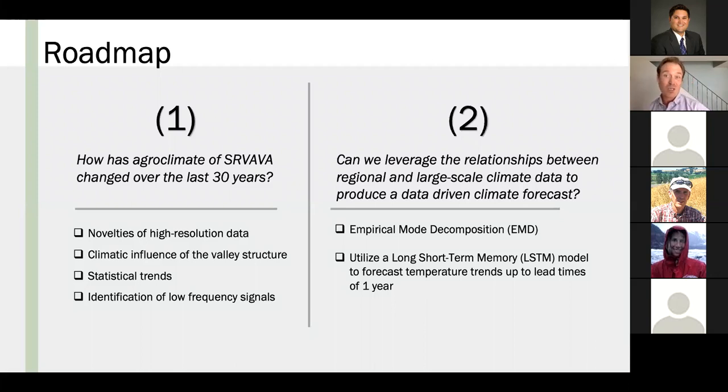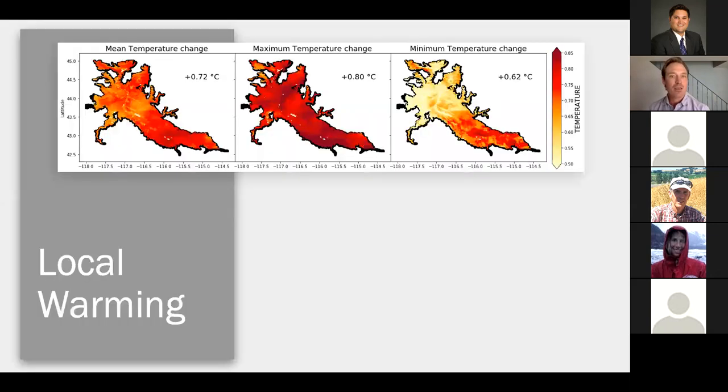That leads into question two, which is can we leverage the relationships we find with these low frequency signals and large scale climate into a data driven climate forecast. To do so, we're going to be using a signal processing tool called empirical mode decomposition to take some large scale data and feed it into an LSTM neural network to forecast temperature trends with lead times up to one year.